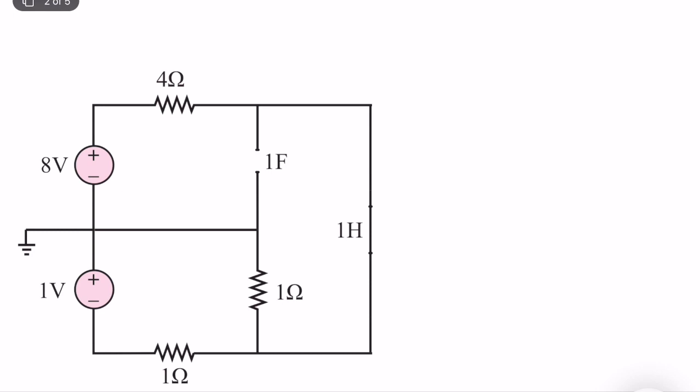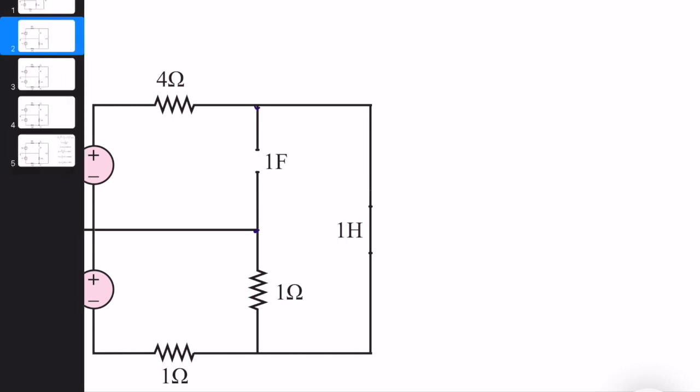So what we should do is analyze the circuit and find the voltage change across the capacitor terminals, and the current that flows through the inductor, to find the energy stored in each element. We can do this using node voltage analysis.